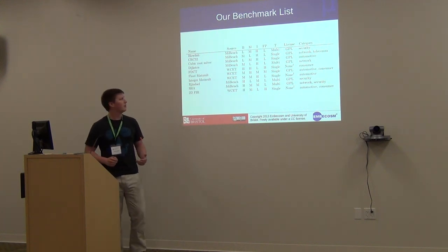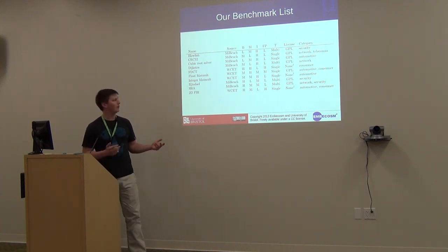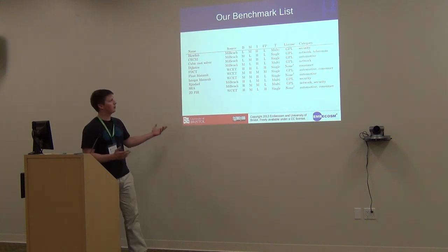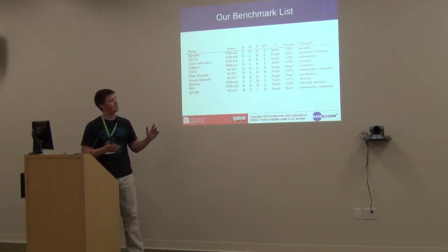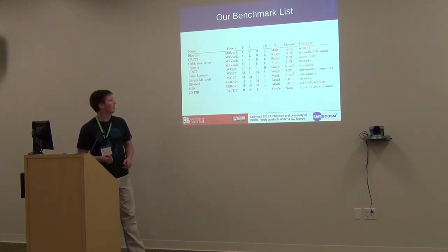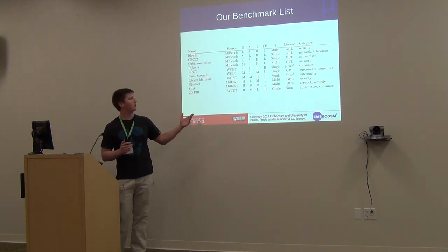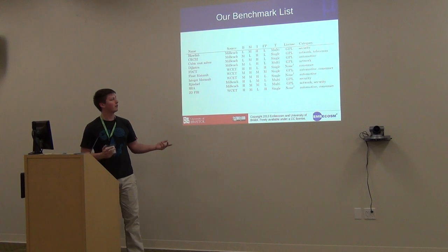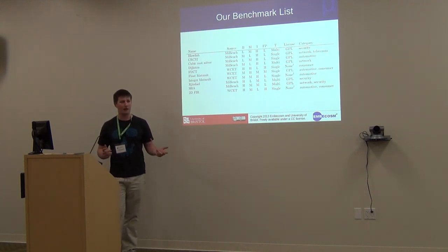In the benchmark table we have branching, memory, integer, and floating point categories. We simulated these on several different architectures to get high, medium, and low category ratings. For example, Blowfish does a lot of integer computation but little branching and a medium amount of memory accesses compared to the other benchmarks. This set of benchmarks covers a good combination of branching, memory, integer, and floating point, exposing all the different effects due to different types of instruction through the pipeline and different memory accesses.